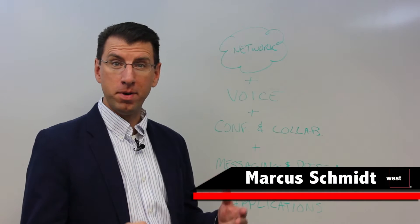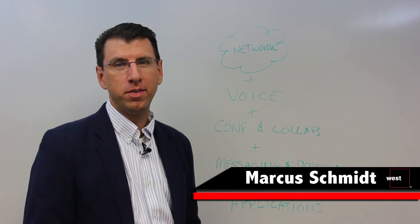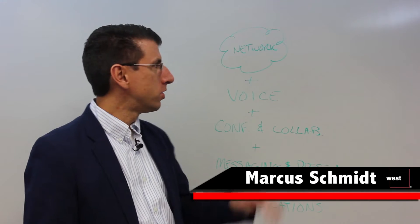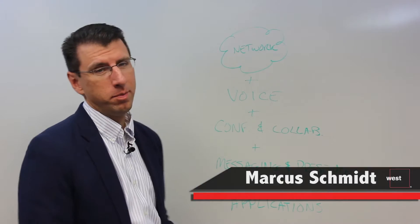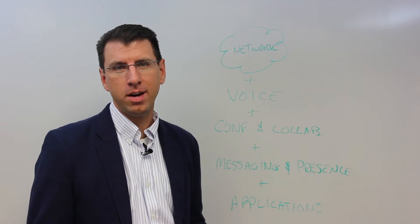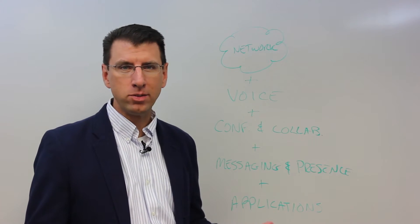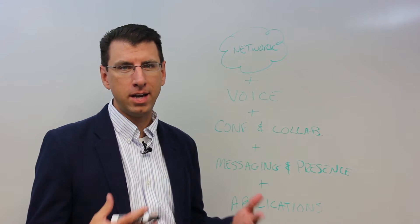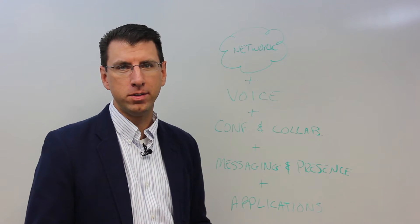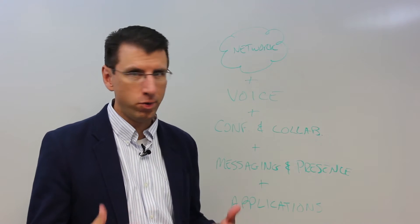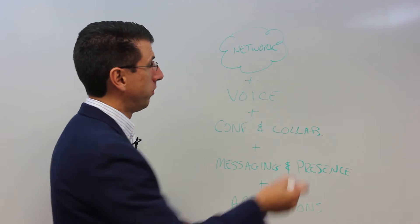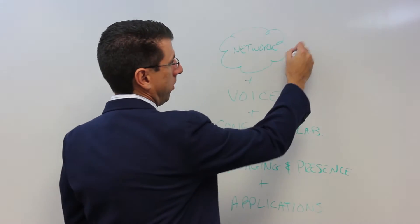Let's talk about what the components are of a unified communication solution. It starts with the network. Basically, you can't have a really good communication solution unless you have a really good network. If the network isn't reliable or doesn't have high enough bandwidth or high enough performance, all the rest of your communications work is going to suffer. So the first component is the network.